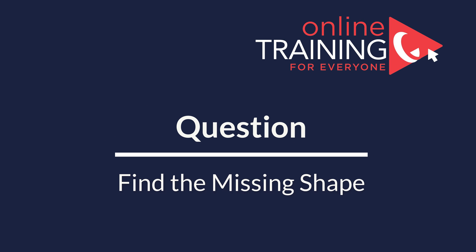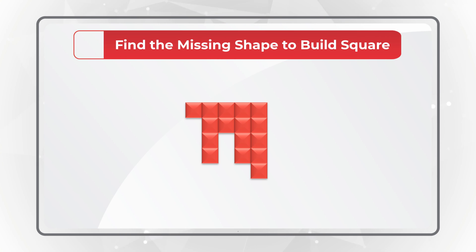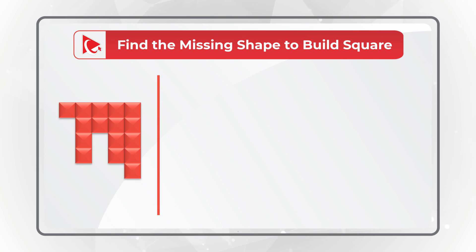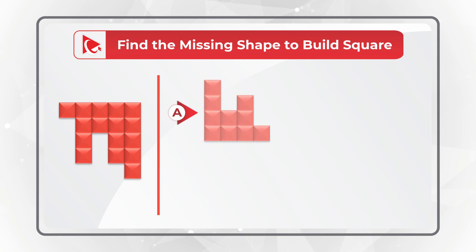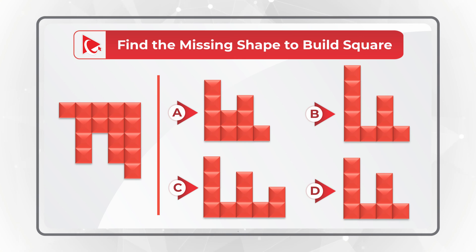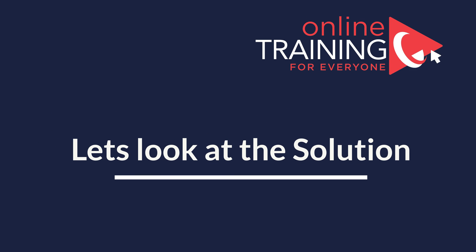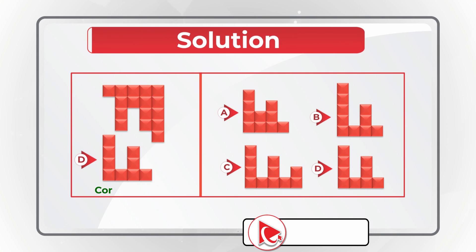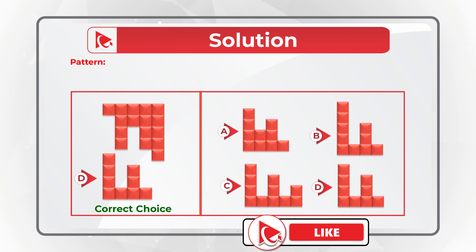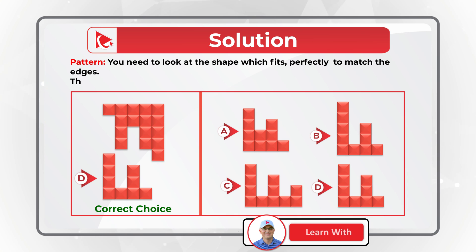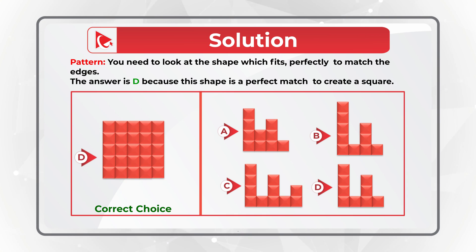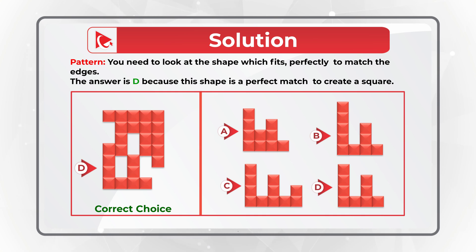Here's a very interesting question to test your spatial reasoning. You are presented with a partial square and you need to find the missing shape to build the full square. You have four choices: A, B, C, and D. The correct choice is D — it's the shape that fits perfectly to match the edges. Since this is a 5×5 square, choice D completes it perfectly. Hopefully you nailed this question and now know how to answer similar problems on the test.